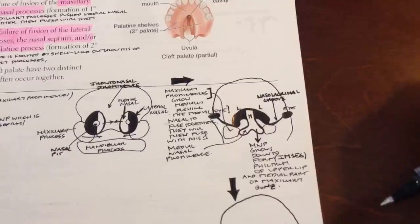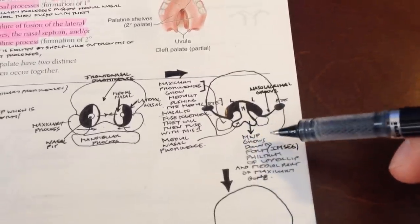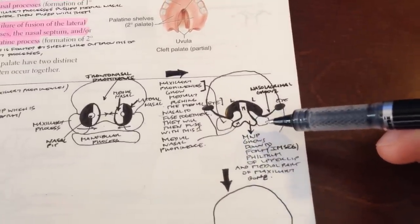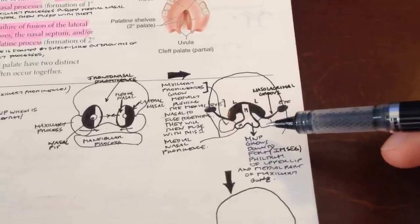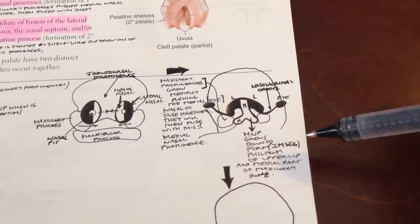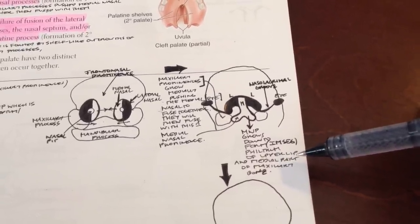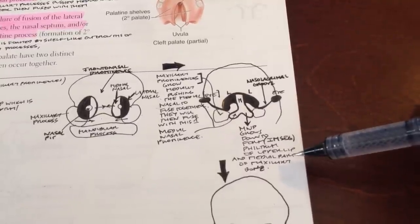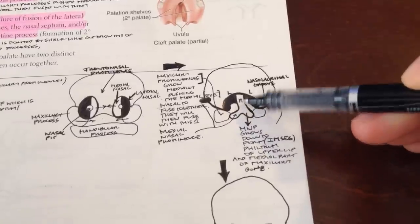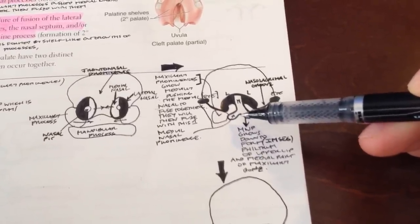The fused medial nasal prominences grow downward to give rise to the intermaxillary segment — named because it sits between the maxillary processes that pushed the medial nasal prominences together. The intermaxillary segment goes on to form the philtrum of the upper lip, the medial part of the maxillary bone, and the upper teeth. This structure is at the midline, essentially forming the philtrum of the nose.